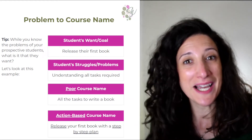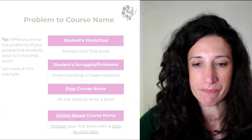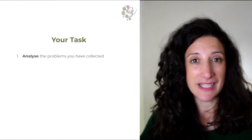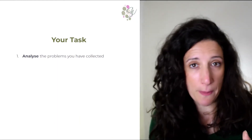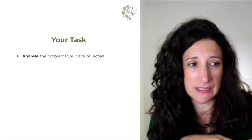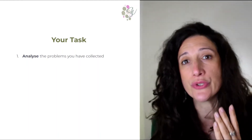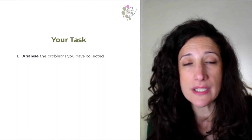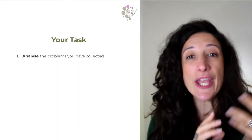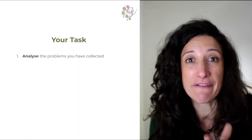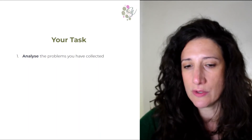Let's look at some tasks you can now go and complete to start creating your course name. You have four tasks. First, analyse the problems you have collected through your market research — what you've collected from online courses, discussions you've had — what are the problems your students have? If you don't yet know this, I have other videos in my YouTube channel about how to conduct market research and how to continuously collect feedback so that you can analyse the problem.